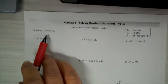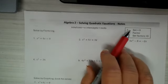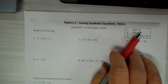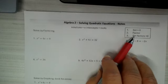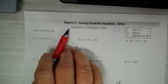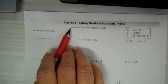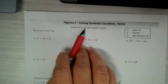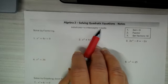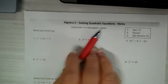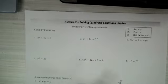The first one we're going to solve by factoring. Here are the steps: set it equal to zero, factor, and then set those factors equal to zero. When we use the word solutions, we're also noting that those are the x-intercepts and the roots. So those three terms are used interchangeably.